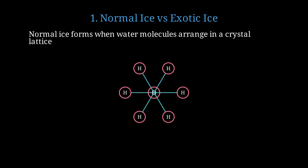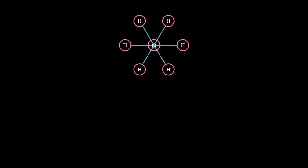Here's a simplified view of normal ice structure. Each oxygen atom is surrounded by hydrogen atoms in a rigid, organized pattern. Normal ice exists at one atmosphere of pressure and zero degrees Celsius.